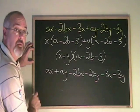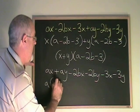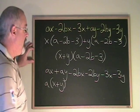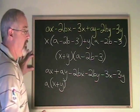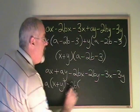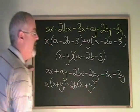Looking at just the first group of two terms, they have a common factor of a. And if I factor out that a, I'm left with x plus y. The second group of two terms have a common factor of minus 2b. And if I factor that out, I will get x plus y inside the bracket.